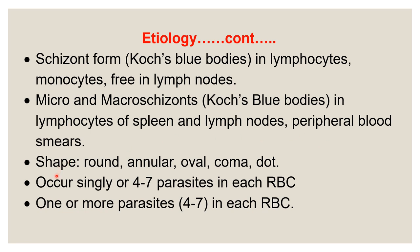The shapes of schizonts are round, annular, oval, comma, or dot-shaped. The organism occurs singly or in numbers of four to seven parasites per infected RBC. One or more parasites, approximately four to seven per RBC, are also observed.